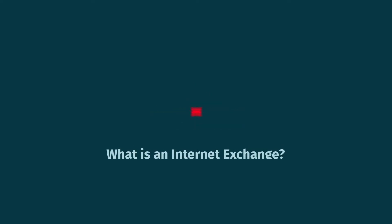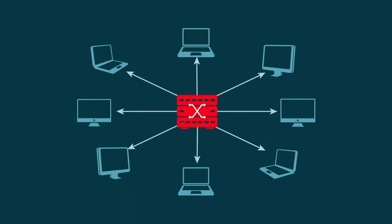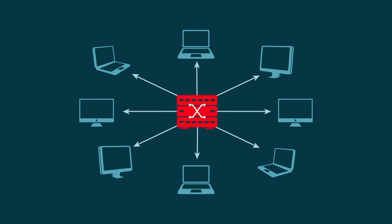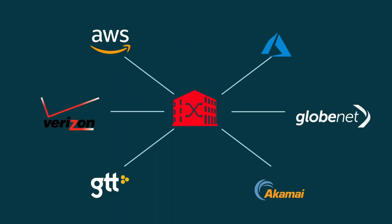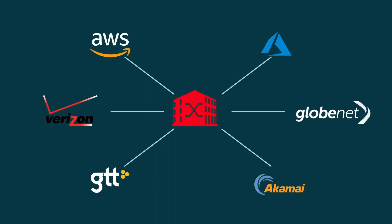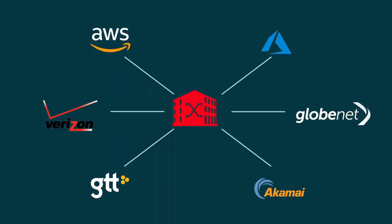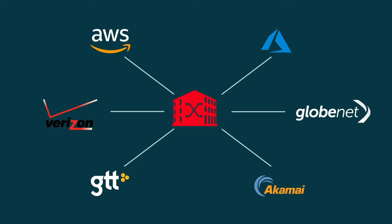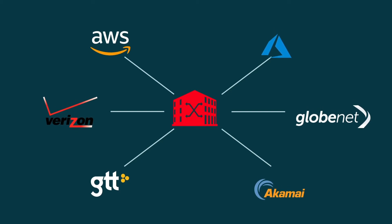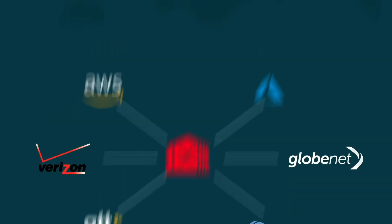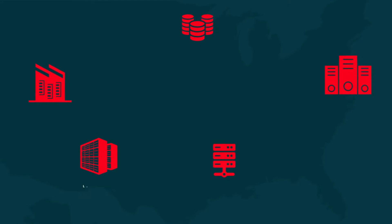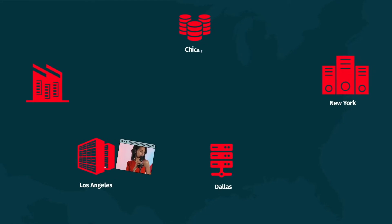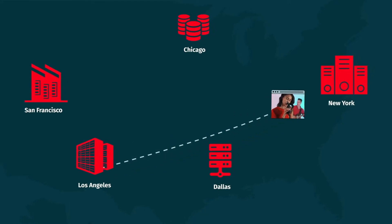An internet exchange is essentially a local area network that connects networks instead of user devices. Organizations join internet exchanges in order to control data traffic routing — they don't want to let the internet decide how to route their content.